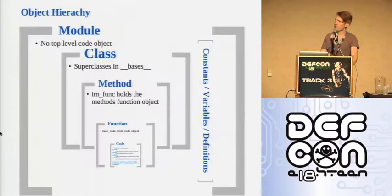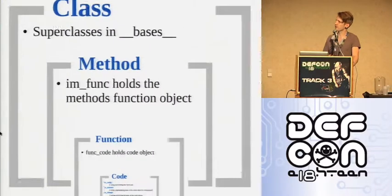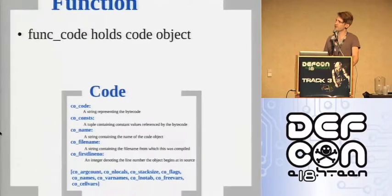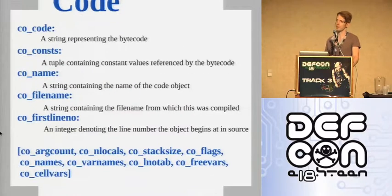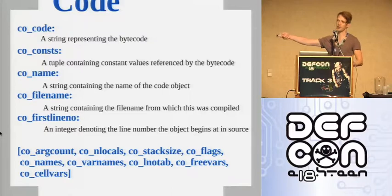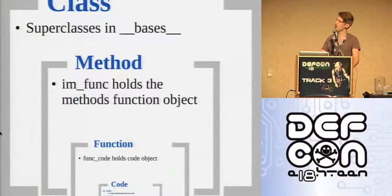The object hierarchy: modules don't have a code-level object after import — a language design issue that's a pain for reversing. Then there are class-level objects; all superclasses are in __bases__. Classes have methods, which are wrappers for functions held in the im_func object. Functions have a func_code object. The code object — what we actually care about — has various attributes including the co_code attribute, which is a string representation of the bytecode. There are also constants, variable names, and line numbers — all really useful for reversing techniques.